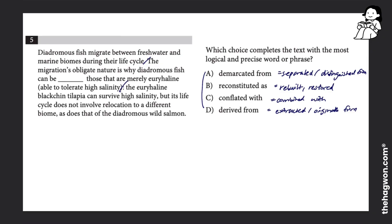And the part with the blank says the migration's obligate nature—obligate means required or restricted to, so it's a must. So the migration is a must, is why diadromous fish can be blank those that are merely euryhaline.